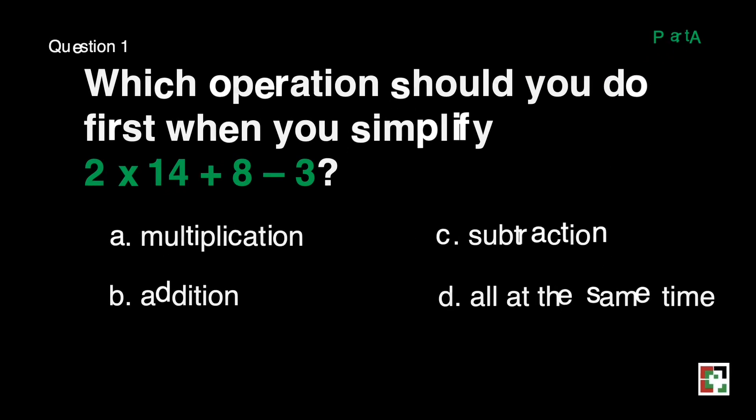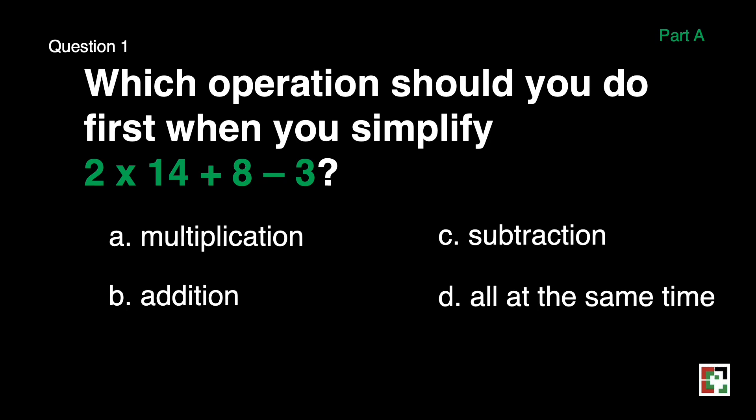For the first question, which operation should you do first when you simplify 2 times 14 plus 8 minus 3? A, multiplication, B, addition, C, subtraction, D, all at the same time. All you need to do is to write the letter of the correct answer.